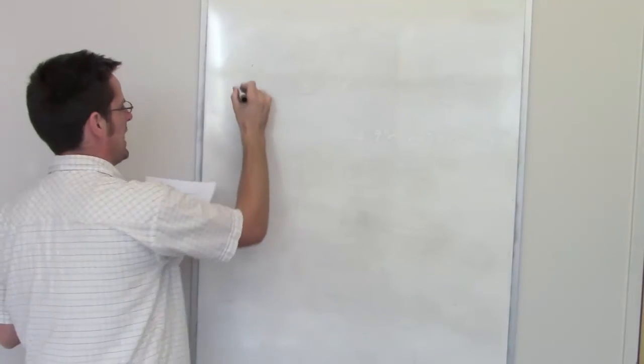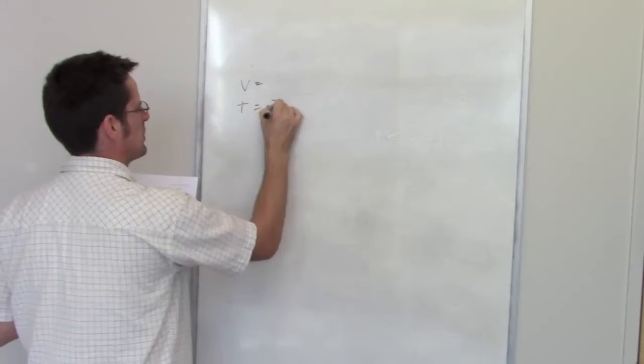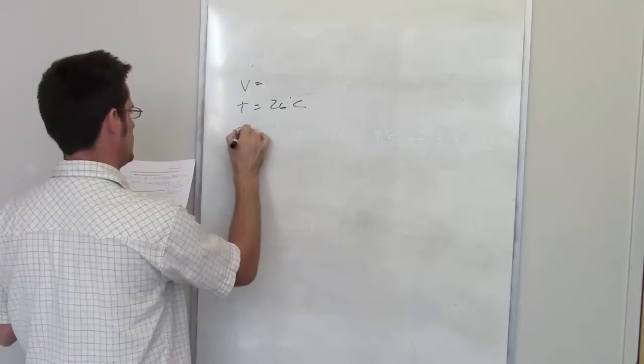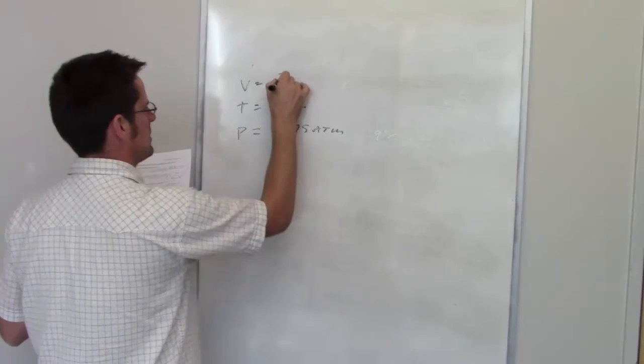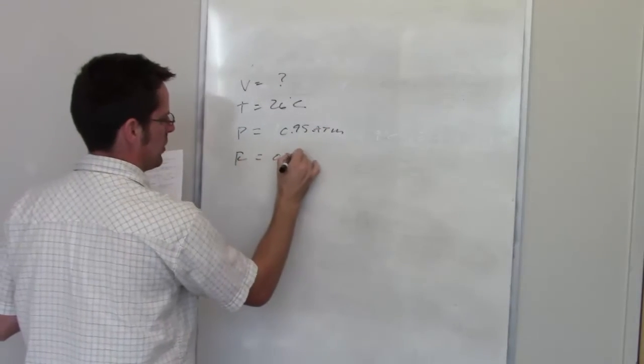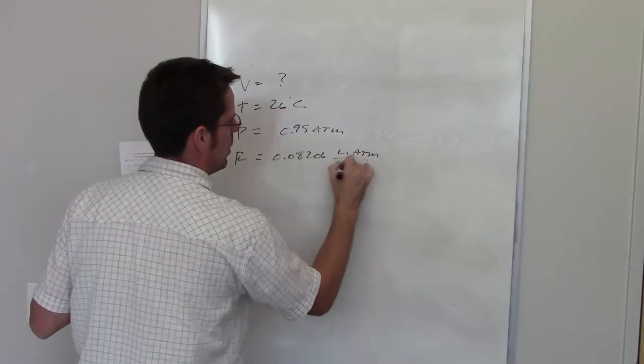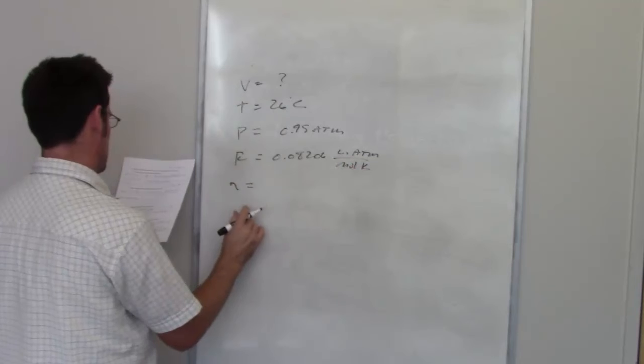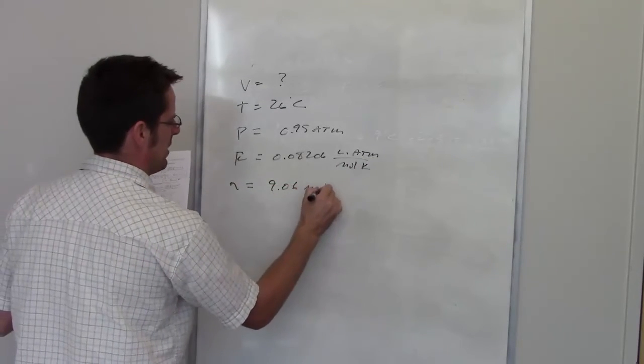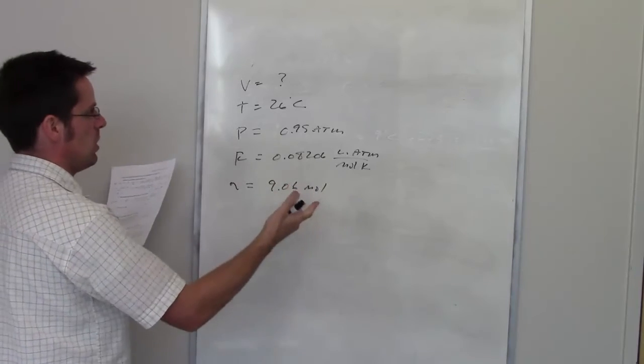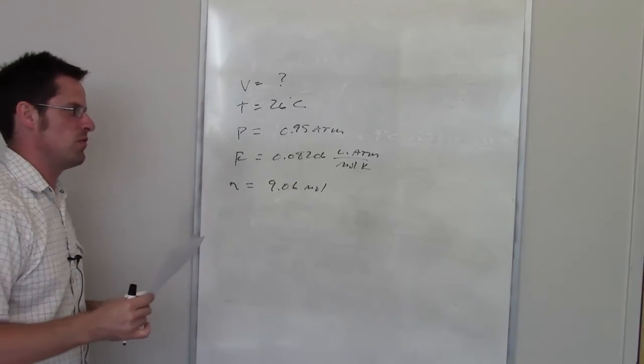In part B of this question, it asks us what volume would this oxygen occupy if the temperature were 26 degrees Celsius and the pressure were 0.95 atmospheres. So the volume is the unknown. I already know what R is, of course, it's 0.08206 liter atmospheres per mole kelvin. We've determined from our previous calculations that the number of moles of oxygen or O2 in the system is 9.06 moles. So all I have to do is use the ideal gas law to determine what the volume is in this particular case.